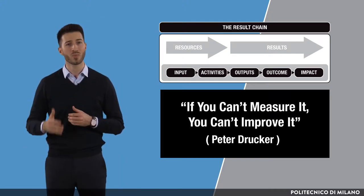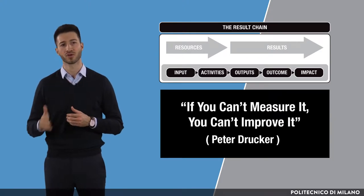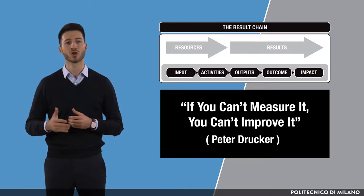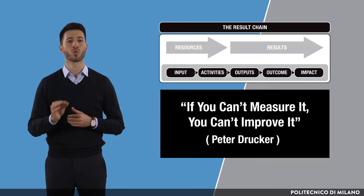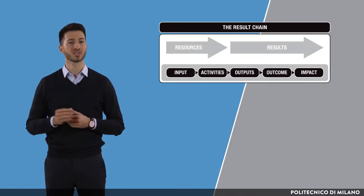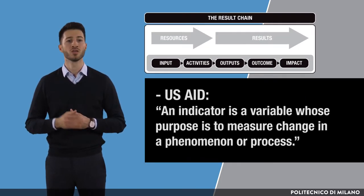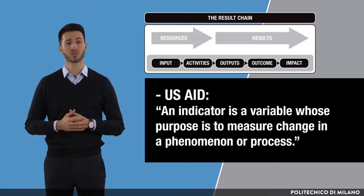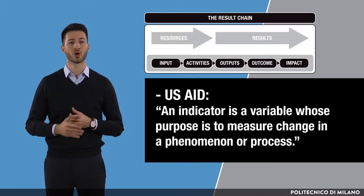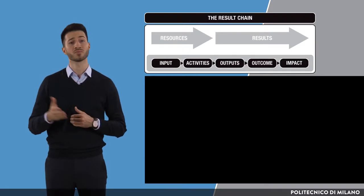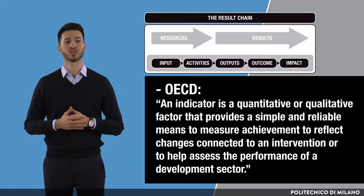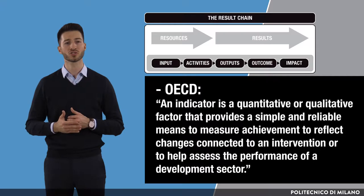We define indicators as impartial measures of reality or phenomena that are verifiable and repeatable and not subject to interpretation. They help us reduce a large amount of information to a very few important elements. USAID defines an indicator as a variable whose purpose is to measure change in a phenomenon or process, while OECD describes an indicator as a quantitative or qualitative factor that provides a simple and reliable means to measure achievement, to reflect changes connected to an intervention or to help assess the performance of the development sector.